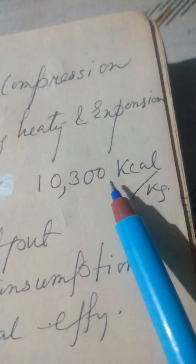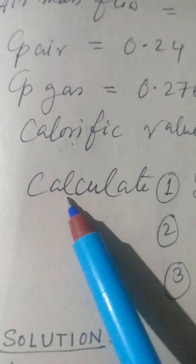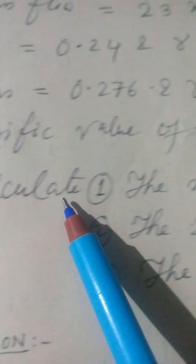Calorific value of fuel is equal to 10300 kilocalorie per kg. Calculate.